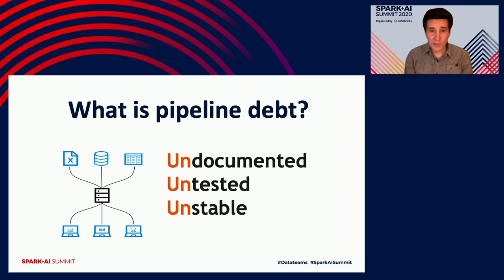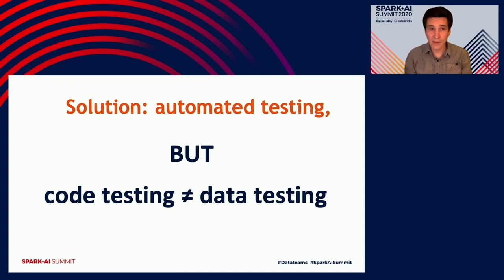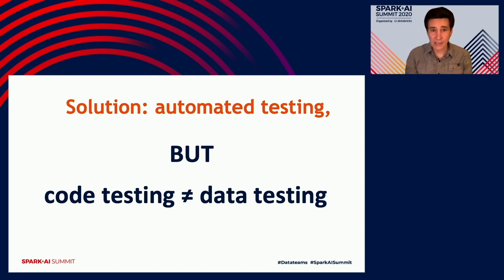If you tell this story to a software engineer, they will probably say it's a solved problem — the solution is automated testing: unit tests, integration tests, system testing, and CI. And that's correct. Data pipelines are software, and all the best practices of testing code apply. But data pipelines, in addition to untrusted code that needs to be tested, bring another untrusted entity: data.